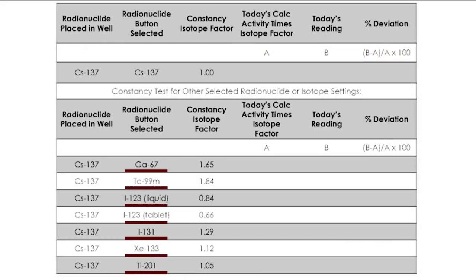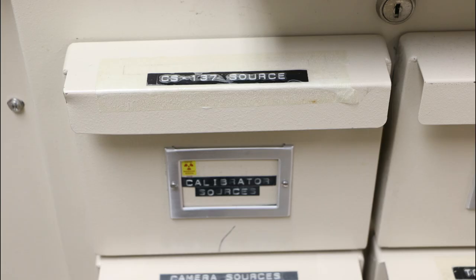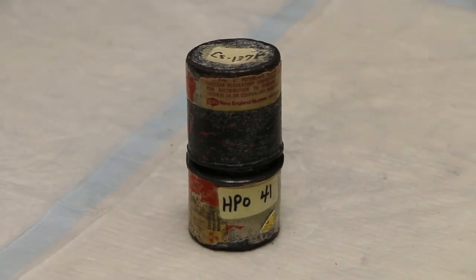The QC constancy check is performed on each isotope that is going to be used that day. Cesium-137 is the preferred radioactive source. It is a long-lived isotope that degrades at a precise, measurable rate over time.